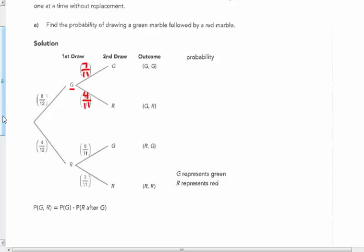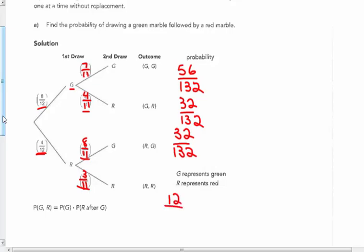If I pick a red one first, four-twelfths, I have eight green ones out of eleven left. If I pick a red one and then a red one, I only have three out of eleven red ones left. So green-green would be eight-twelfths times seven-elevenths, which would be fifty-six out of one-thirty-two. Green-red would be eight-twelfths times four-elevenths, which would be thirty-two out of one-thirty-two. Red-green would be four-twelfths times eight-elevenths, which would be thirty-two out of one-hundred-thirty-two. Red-red would be four-twelfths times three-elevenths, which would be twelve out of one-hundred-thirty-two. I can check myself: adding fifty-six and thirty-two makes eighty-eight, plus thirty-two gives me one-twenty, plus twelve more gives me one-hundred-thirty-two out of one-hundred-thirty-two.